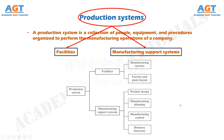Product design and certain business functions are included in the manufacturing support systems. In modern manufacturing operations, portions of the production system are automated or computerized. Production systems also include people — people make these systems work. Direct labor people, or blue-collar workers, are responsible for operating the facilities, and professional staff people, or white-collar workers, are responsible for the manufacturing support systems. We will now discuss in detail both facilities and manufacturing support systems.